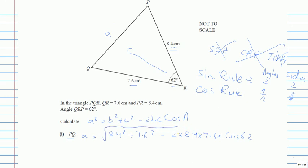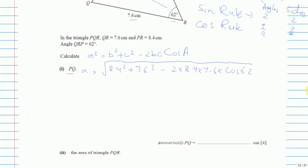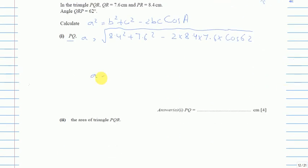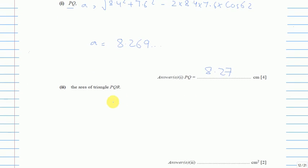Work that out and take the square root, and you get 8.269. I always show four figures so the final answer is correct to three significant figures, which gives 8.27.